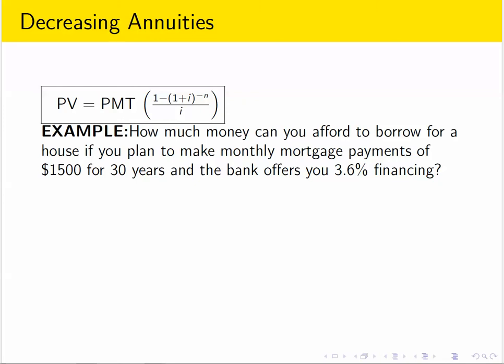In this example, let's imagine we're borrowing for a house and we plan to be able to make monthly payments on that home loan of $1,500. We plan to take out a 30-year loan and the bank tells us we can get 3.6% financing. That term 'financing' means the annual interest rate — it's typical when the bank is making a loan because it sounds generous, but it really just means the interest they're charging you.